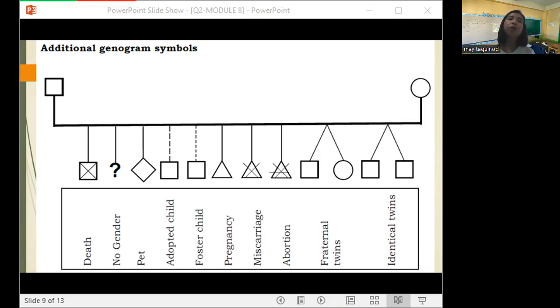Then fraternal twins, one square and one circle. And for identical twins, we have two squares.